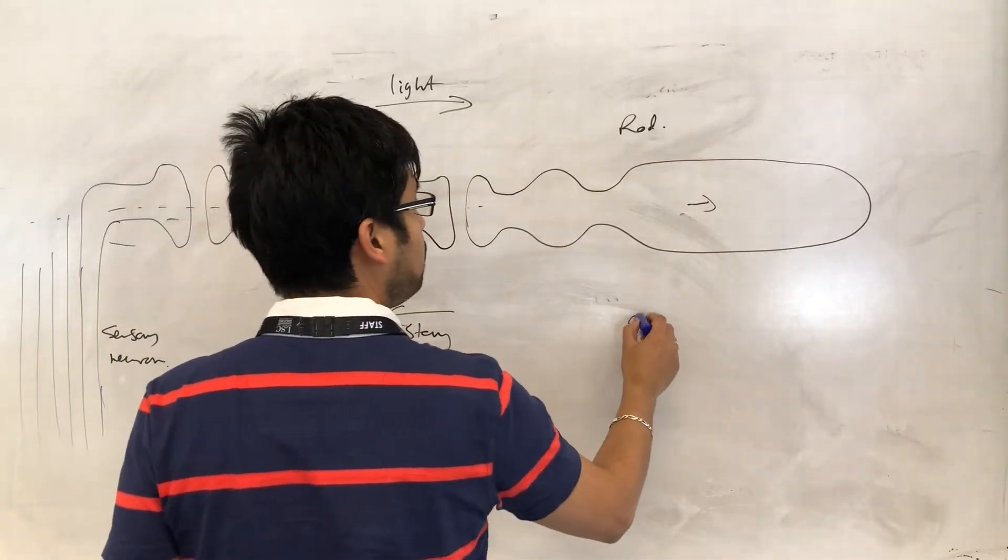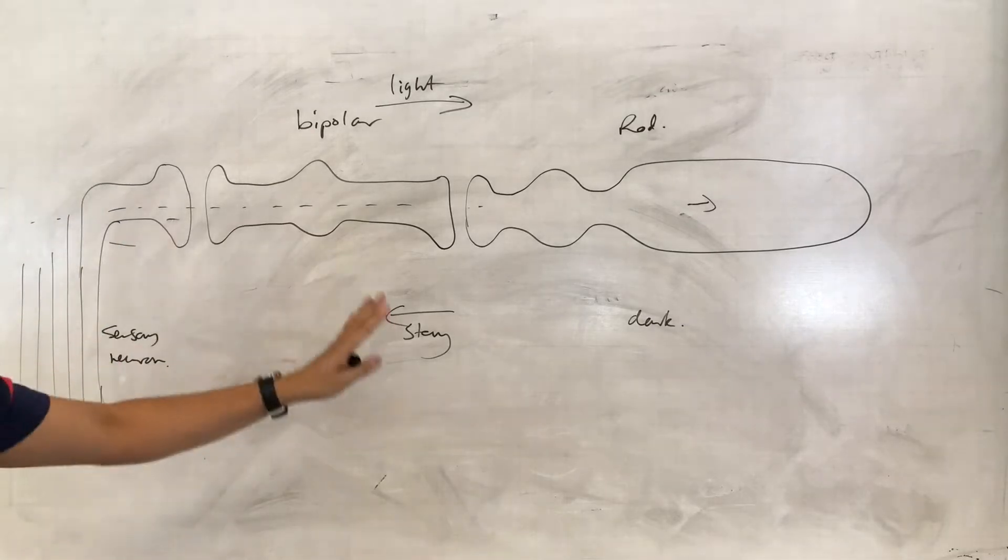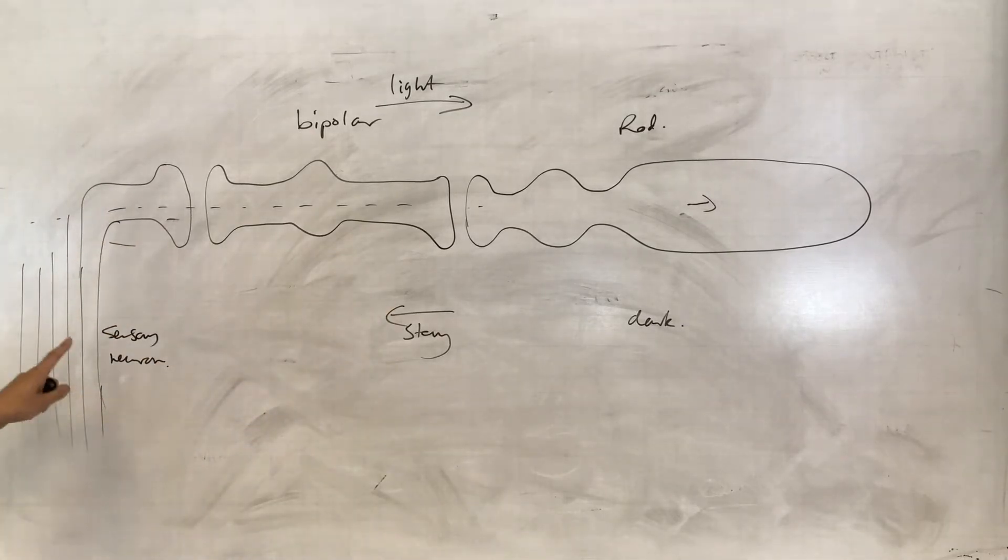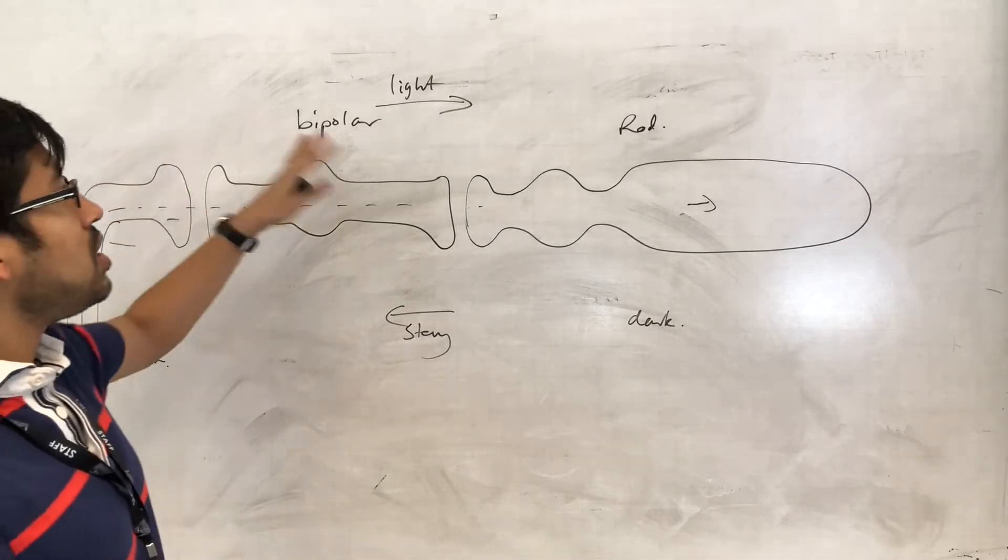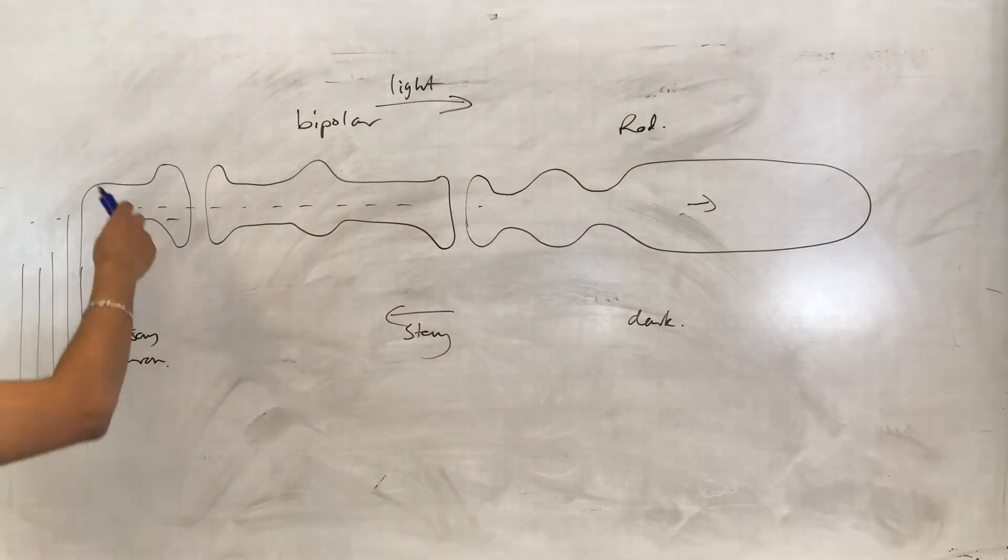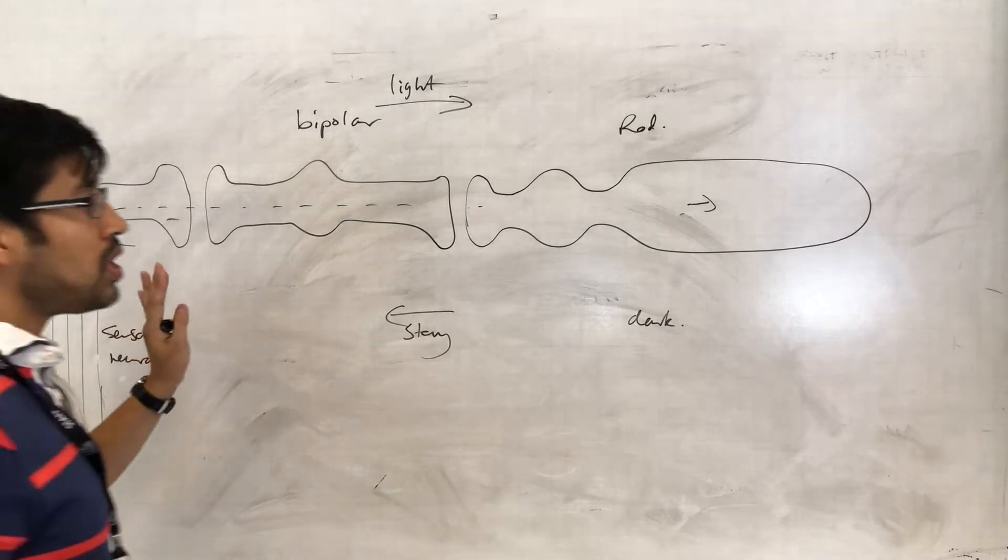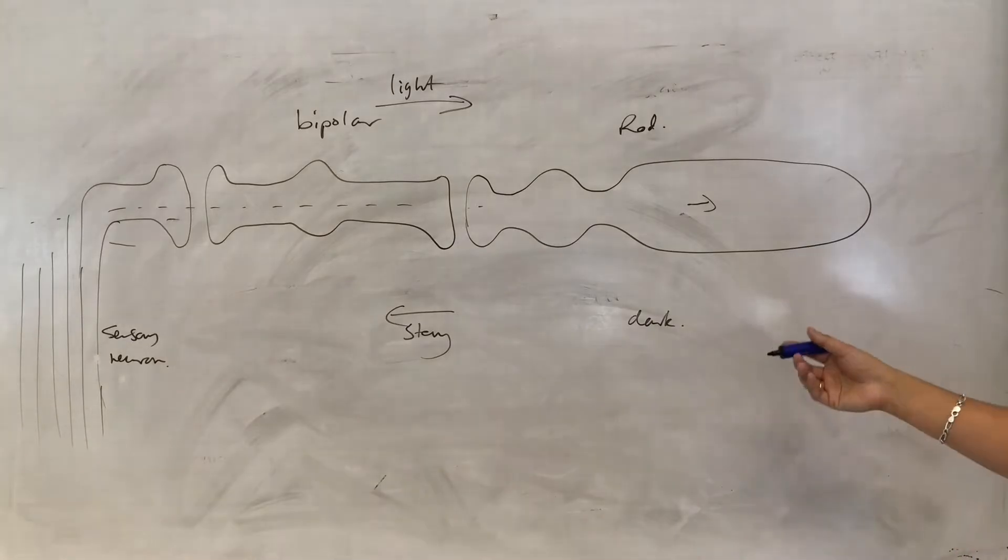Now, in the dark, because in the dark we need to understand what the situation is that results in the sensory neuron not having action potentials, but then we need to see how photons of light cause that situation to change and so we have impulses moving down the sensory neuron. So, in the dark, the situation is like so.